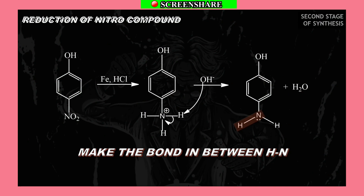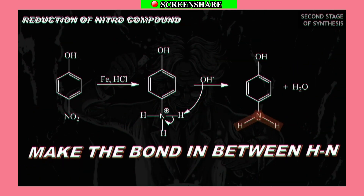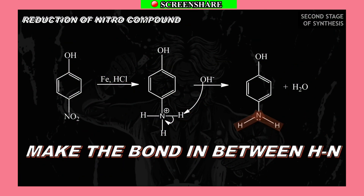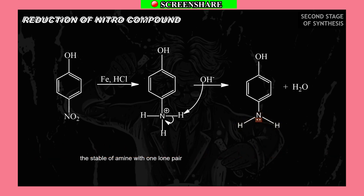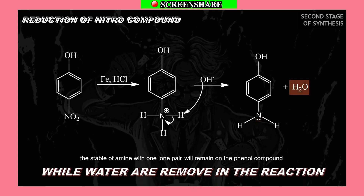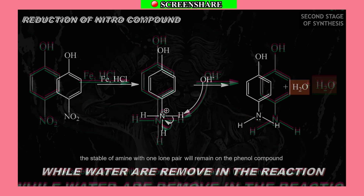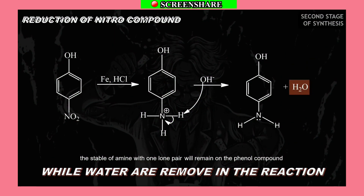The hydroxide ion will attack the hydrogen atom of the amine, making the bond between N–H shift to the amine group. This stabilizes the amine with one lone pair remaining on the phenol compound when water is removed in the reaction.